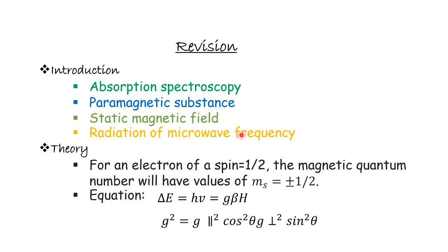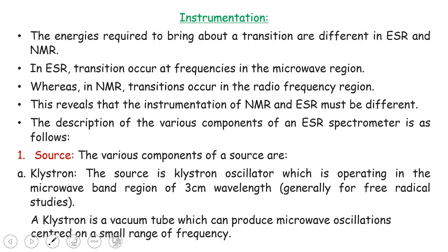In theory, every electron has a spin of 1/2 — it can be either +1/2 or −1/2. The magnetic quantum number ms has two values: +1/2 and −1/2. The energy equation is ΔE = hν = gβH, where g is the Landé splitting factor, given by g² = g‖² cos²θ + g⊥² sin²θ. These are the points we discussed in the previous lecture on introduction and theory. Today we will look at the instrumentation of the ESR spectrophotometer.